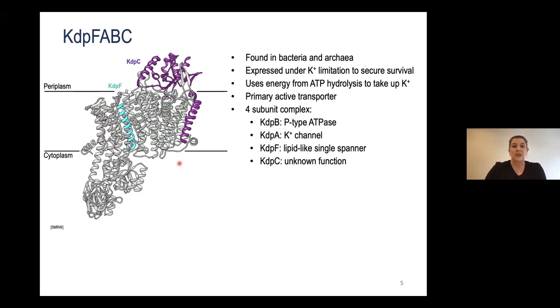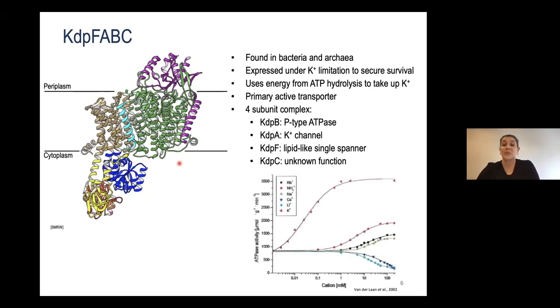KDPF-ABC was first discovered in the early 70s by Wolfgang Epstein and has been vigorously studied since. We know it's highly specific for its substrate potassium. Also, the hydrolysis of ATP can only happen in the presence of potassium. And the other way around, transport of potassium can only happen if ATP is there for hydrolysis.